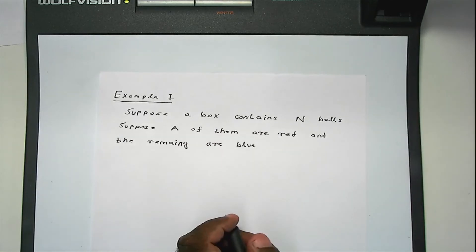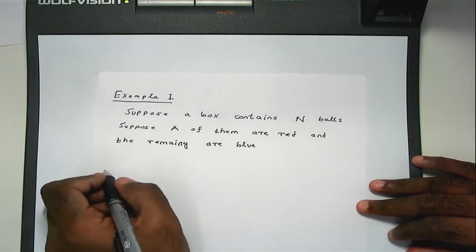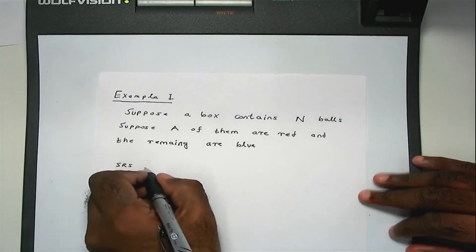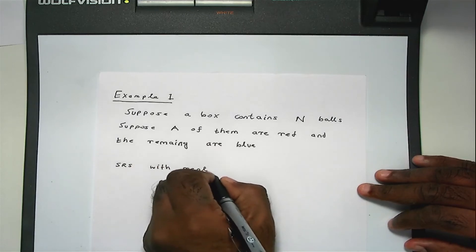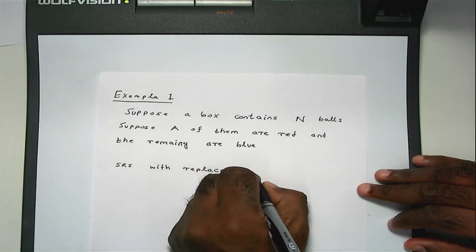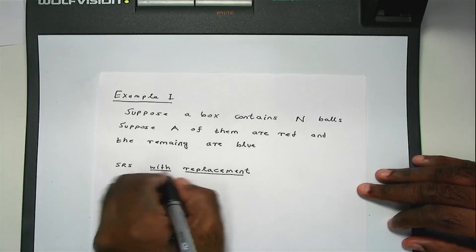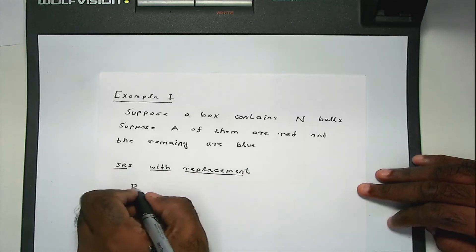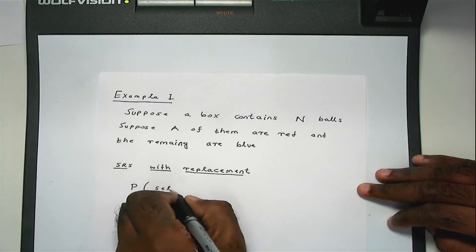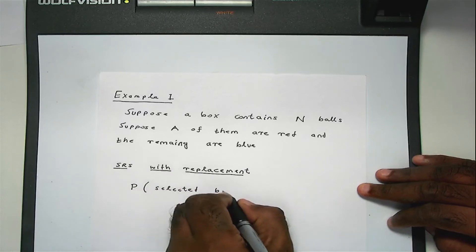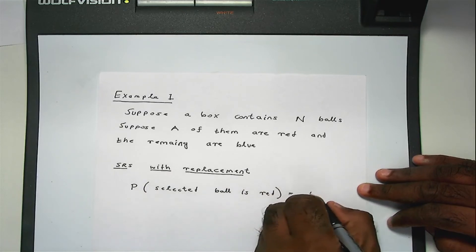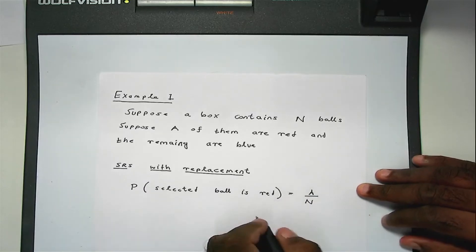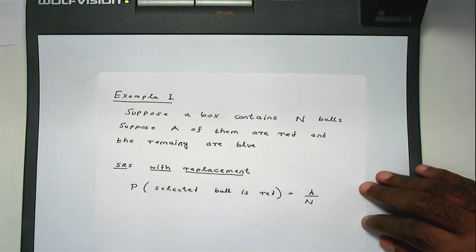Then you should consider SRS with replacement. So under this sampling, the probability that the selected ball is red will be capital A divided by capital N. It doesn't matter how many times you select, you're going to replace the ball. So the probability of the ball being red will be the same at every selection.